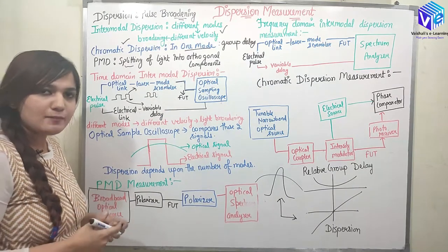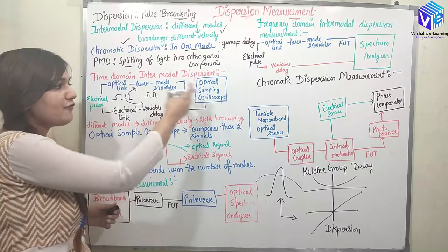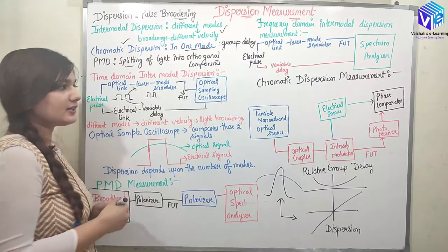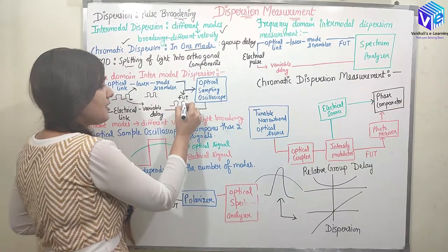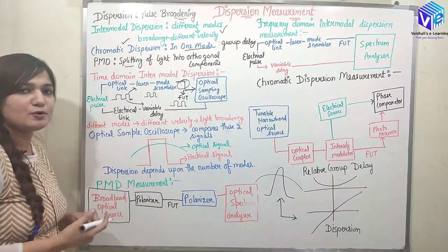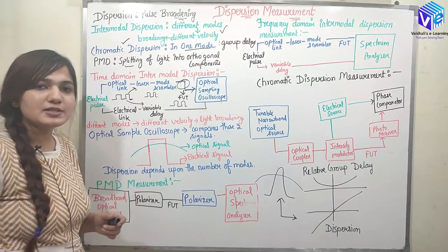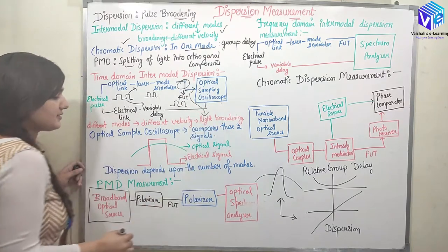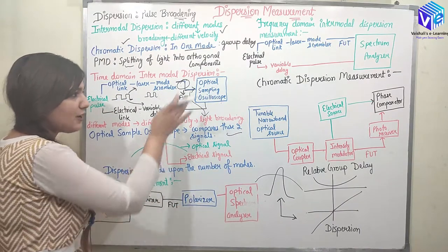After the mode scrambler, after choosing any mode, the input light is sent to the fiber. This fiber under test is connected to the optical input of an optical sampling oscilloscope (OSO). The OSO has two inputs: an optical input and an electrical input. The fiber under test is connected to the optical input, and the electrical signal — after passing through the variable delay — is sent to the electrical input of the OSO. The OSO receives both signals and compares them. Different modes travel with different velocities, causing pulse broadening inside the fiber under test.